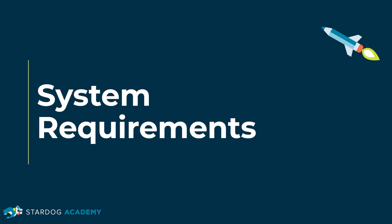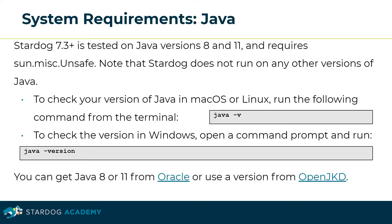This section is about the system requirements for installing Stardog. Stardog versions 7.3 and up have been tested on Java versions 8 and 11, and they require sun.misc.unsafe. Note that Stardog does not run on any other versions of Java. To check your version of Java in macOS or Linux, run the following command from the terminal: java -v. To check the version on Windows, open a command prompt and run java -version.